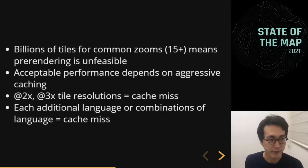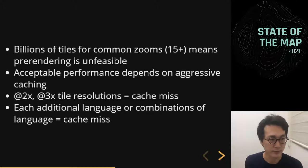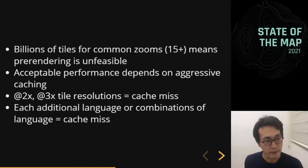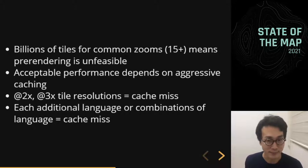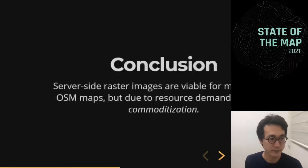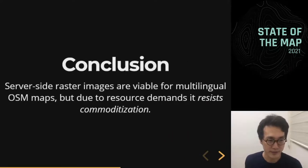But there are a lot of drawbacks to this raster tile approach. If you want to zoom in past about Zoom 15, you'll quickly get to having billions of tiles to render, so pre-rendering becomes unfeasible. The only way to get acceptable performance is to render tiles on demand and cache aggressively. But for devices with high retina or high DPI displays, those need to be rendered separately — a cache miss. And when rendering in different languages like Chinese, Spanish, or Korean, each additional language or combination is also a cache miss. It quickly becomes very taxing on resources. In conclusion, server-side raster images are a viable approach for multilingual OSM rendering, but due to the resources it takes, it's very hard to commoditize.